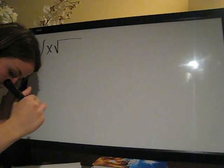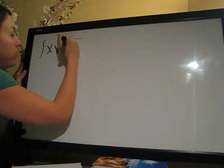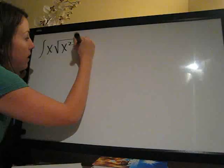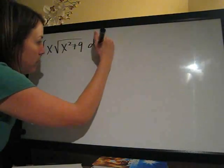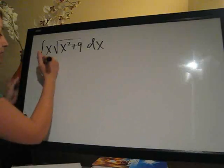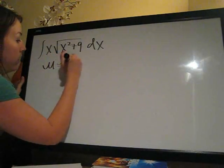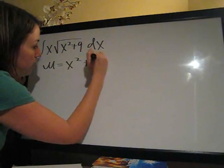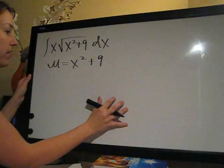Okay, this is another u-substitution problem, with a square root of x times the square root of x squared plus 9 dx. And the problem asks us to substitute for x squared plus 9. It already defines u.